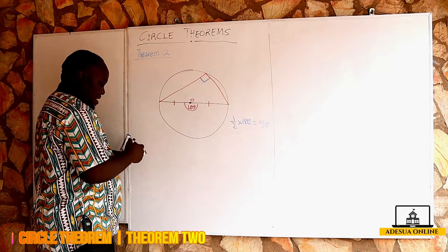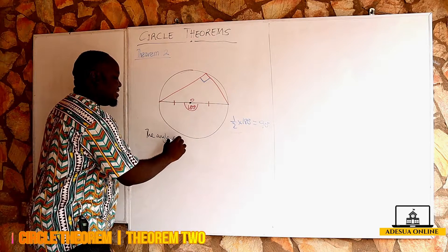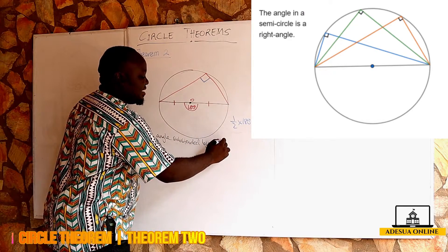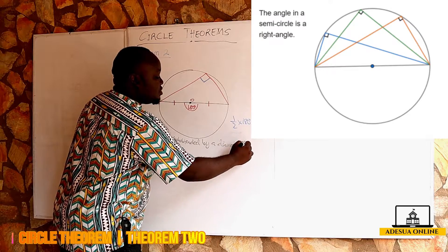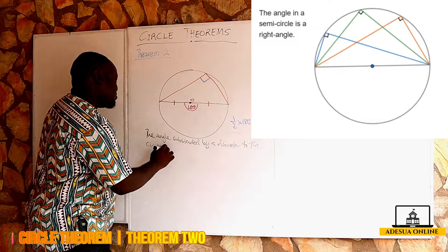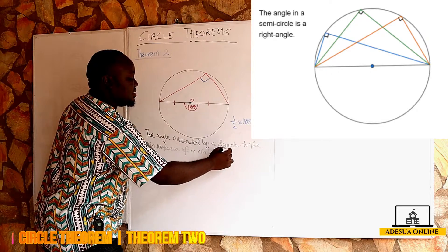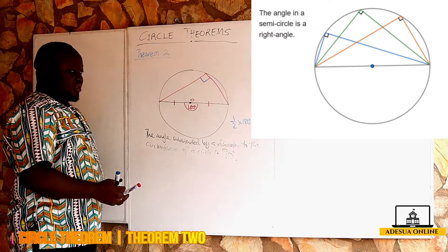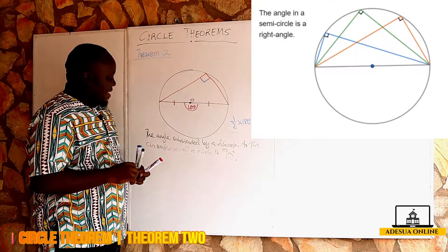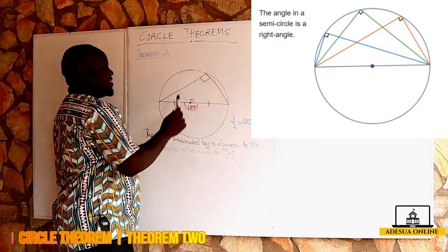This theorem states that the angle suspended by a diameter to the circumference of a circle is 90 degrees. This is our second theorem, which is very short and simple.